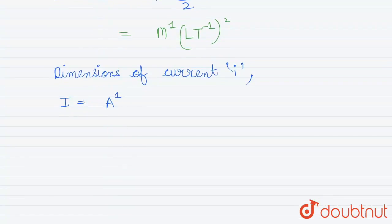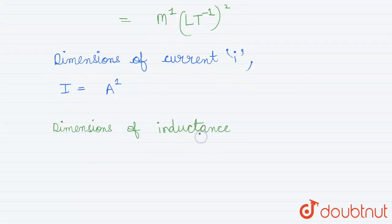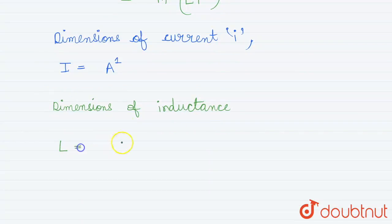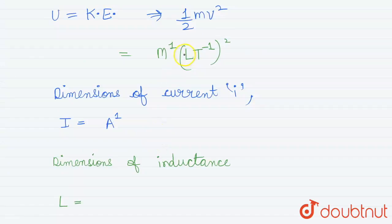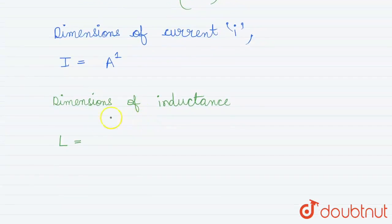So from this we can calculate our dimensions of inductance. This will be U which is m to the power 1, L T minus 1 whole squared upon I squared, which is A squared.